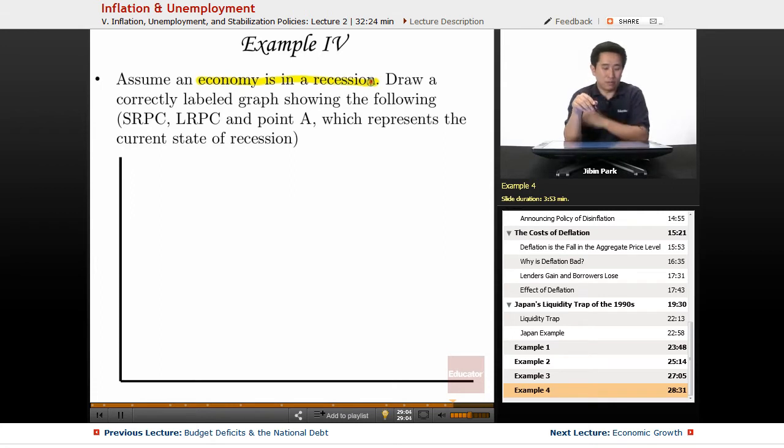So assume an economy is in a recession. Draw a correctly labeled graph showing the following: the SRPC, LRPC, and point A, which represents the current state of recession. So there's going to be multiple answers, but you have to be on the correct side of the LRPC.